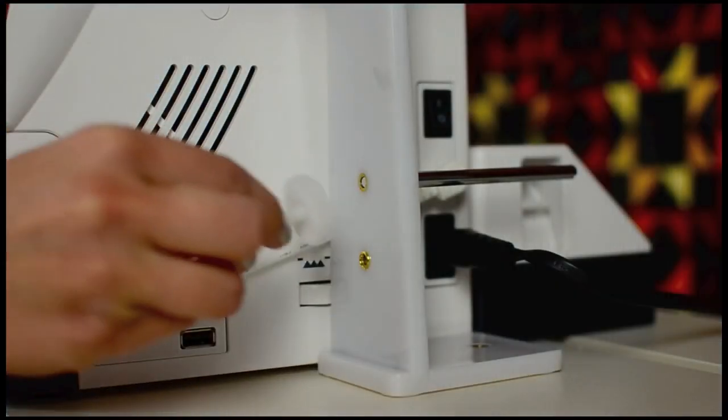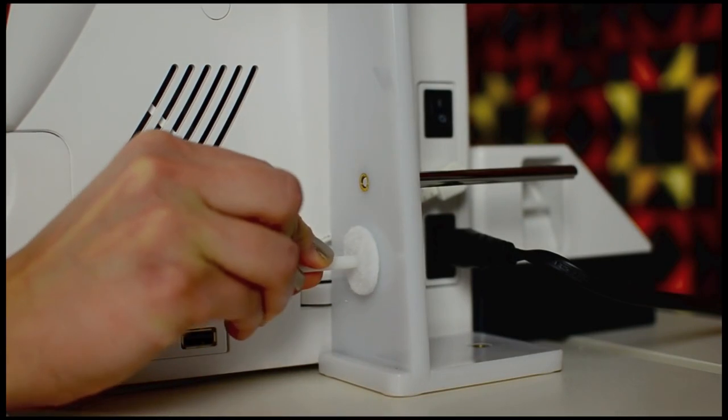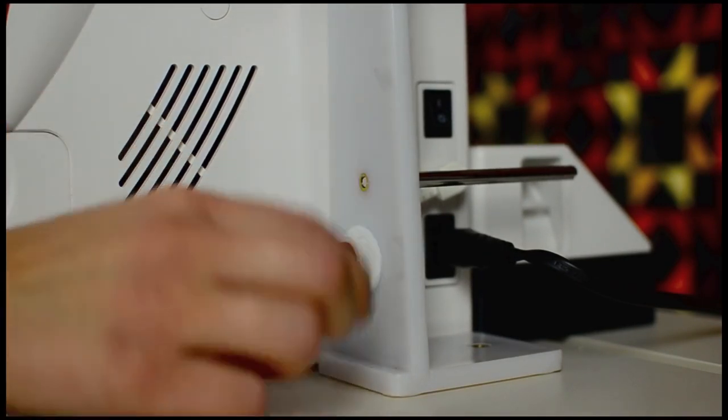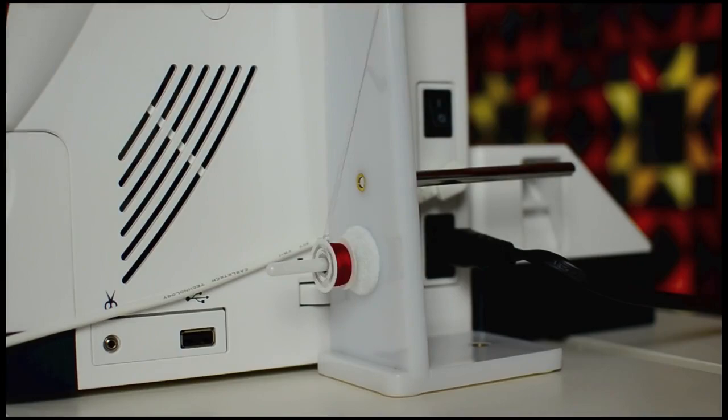Insert the bobbin pin adapter into the bottom hole on the back face. Place your bobbin onto the pin and take directly up to the swing arm. Thread like normal and you're ready to sew!